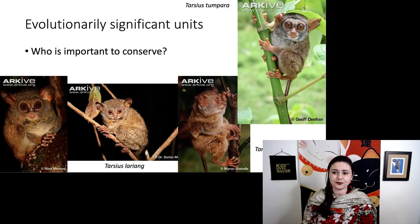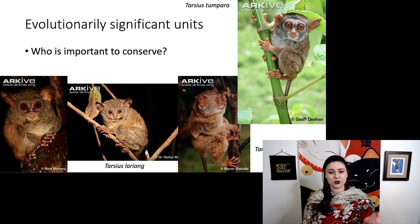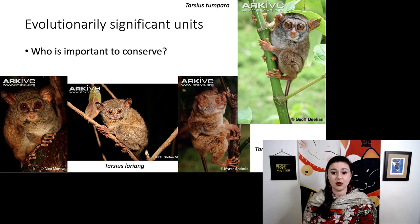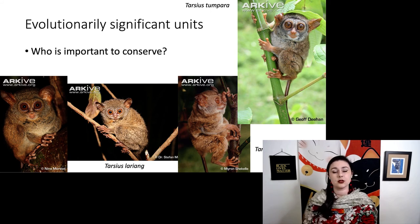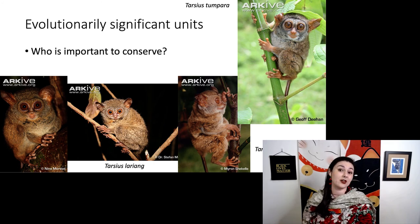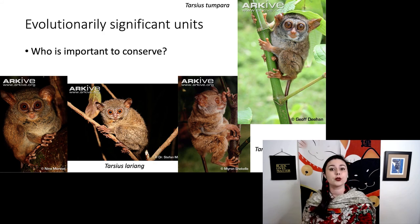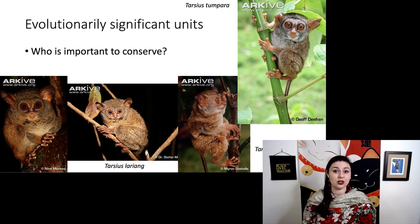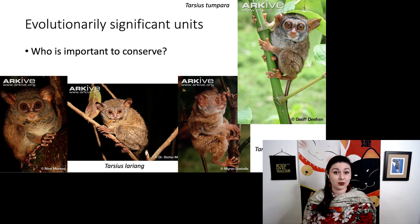That would be pretty sad. If we're considering multiple distinct populations to all be the same species, they might not all be conserved. The important thing is that when we apply species concepts to conservation, we must not ignore important variation. When we want to preserve the natural world, we want to make sure we're preserving evolutionary processes and not just the species themselves. If we simply try to preserve things as they are right now, we are creating the world's largest outdoor zoo. It is more important to conserve the processes of evolution so that species continue to change into the future.